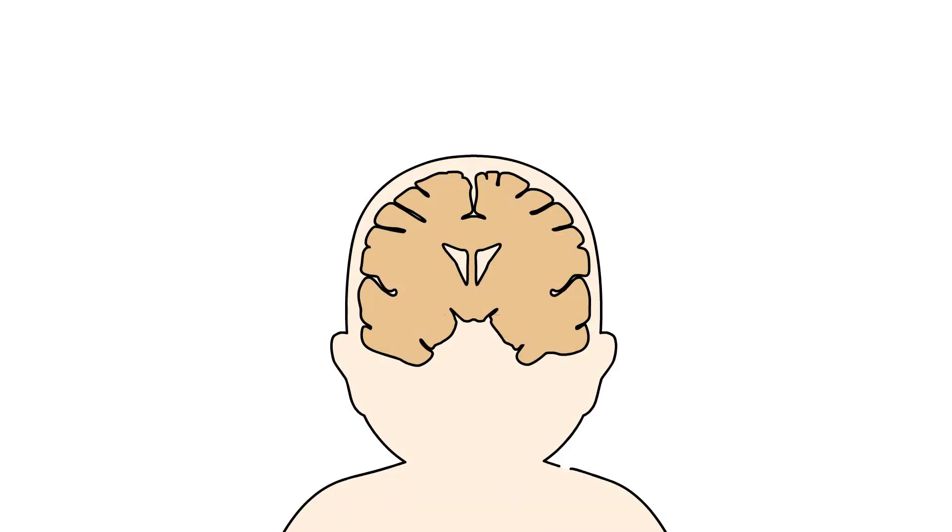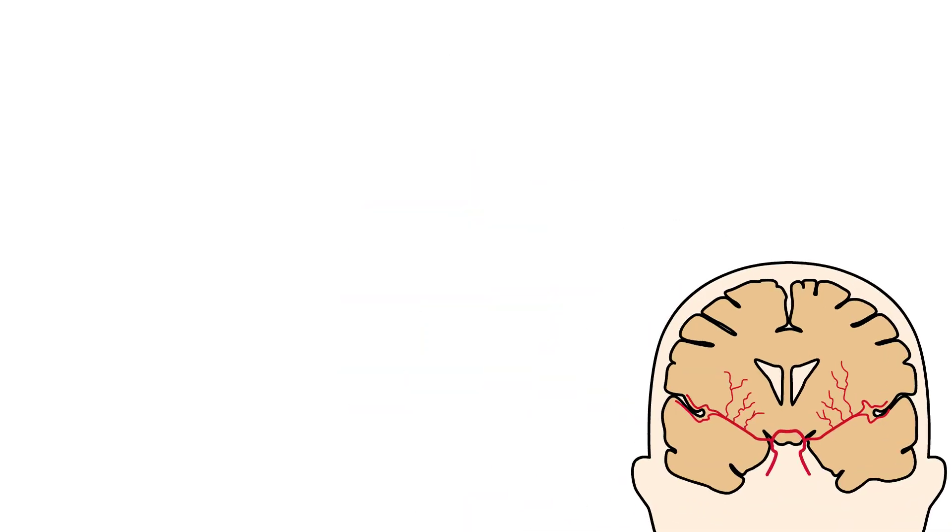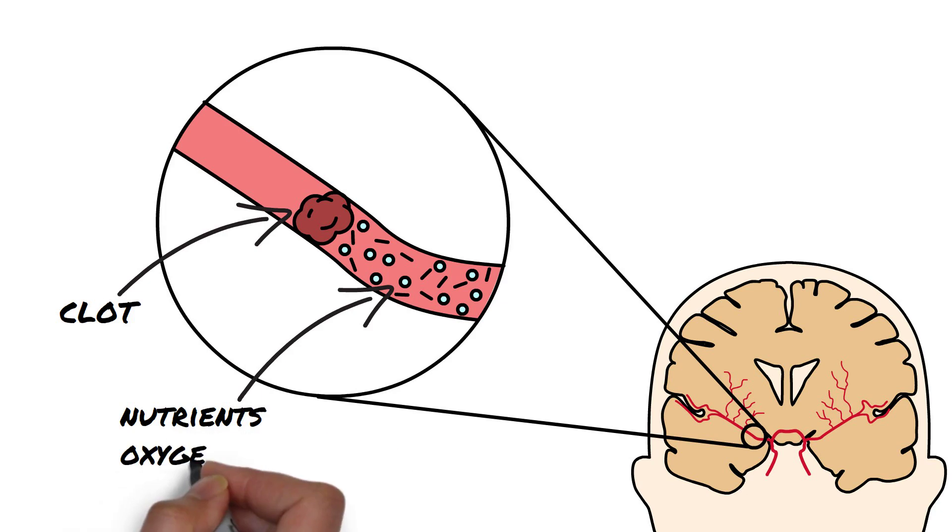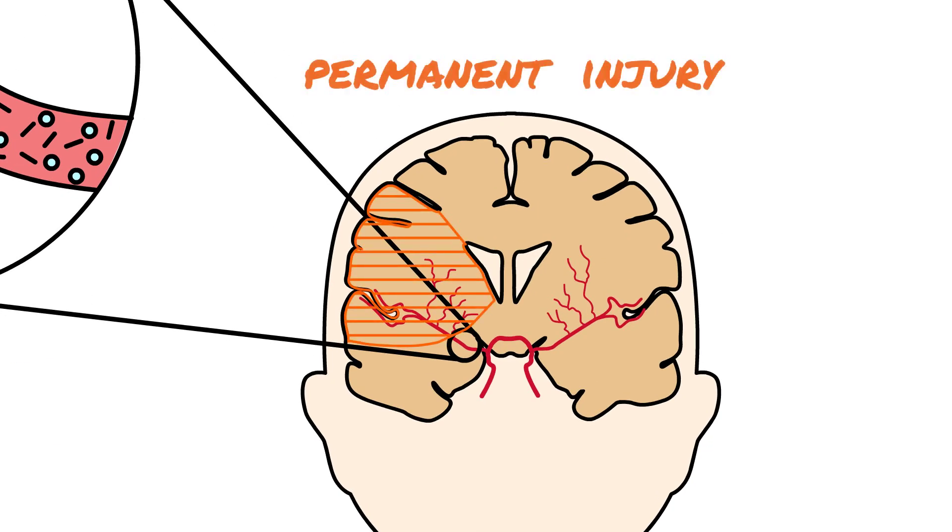An arterial ischemic stroke occurs when the blood flow to a part of the brain is blocked, usually because of a clot in the blood vessels called arteries that supply nutrients and oxygen to the brain. This causes damage to the brain.